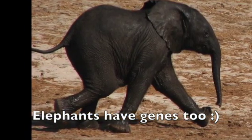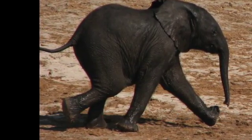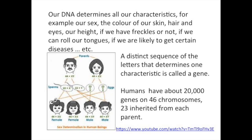Humans have about 20,000 genes on 46 chromosomes — 23 inherited from each parent.